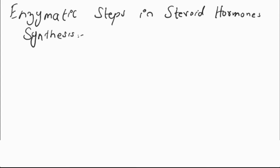As I have explained in my previous lecture, the source of steroid hormone synthesis is cholesterol, and this cholesterol is provided by the low density lipoproteins which are present in circulating plasma. When cholesterol is taken from the circulating plasma into the cell, it is provided to mitochondria and endoplasmic reticulum for the synthesis of steroid hormones.